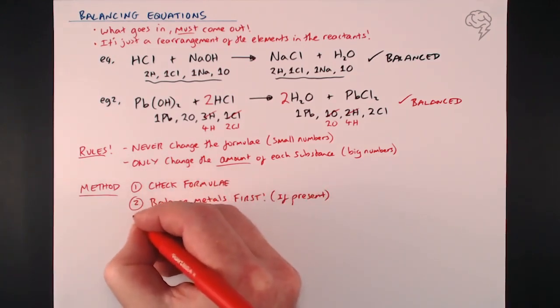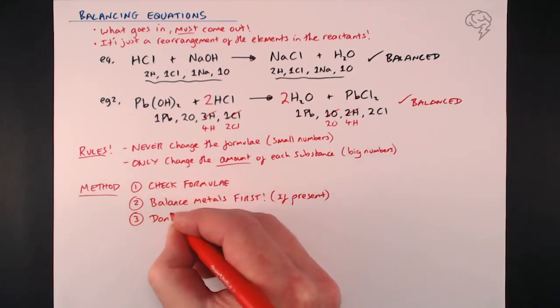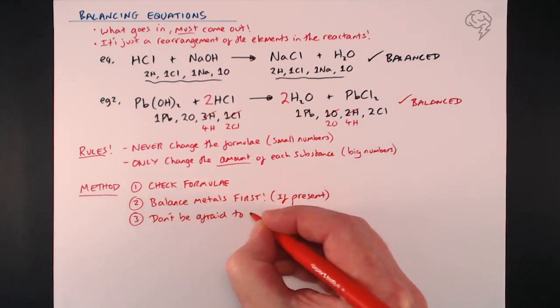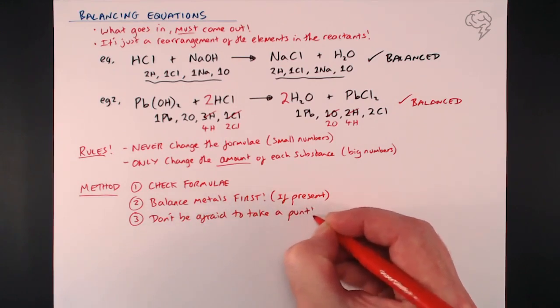If you have to write down, like I did underneath, the amounts of different elements, that can only help you. Thirdly, don't be afraid to take a punt. Give it a go - look at the balance between the numbers of hydrogens or oxygens or chlorines, whatever you've got, and just stick a two in front of something. You've just got to give it a go.